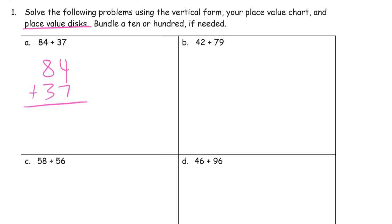So we have 4 ones plus 7 ones. That's 11 ones. That's a 10, a bundle of 10 with 1 left over. Then count our tens. 8 and 3 is 11 and 1 more is 12. That's 100 with 2 tens left over. So there's our 100.